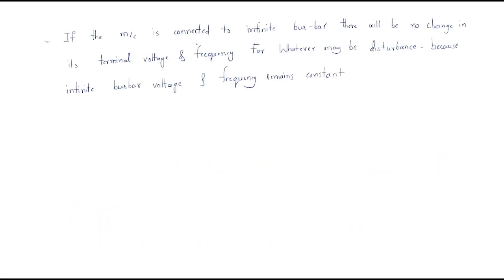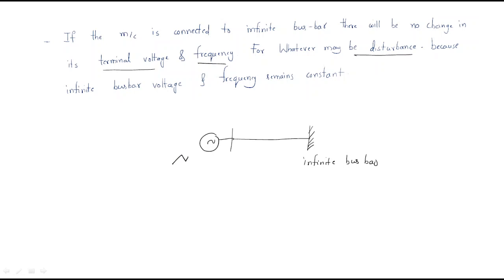Next, if the same alternator is connected to an infinite bus bar, there will be no change in terminal voltage and frequency regardless of any disturbance. Because of the infinite bus bar, both voltage and frequency remain constant — whatever disturbance occurs, both stay constant.